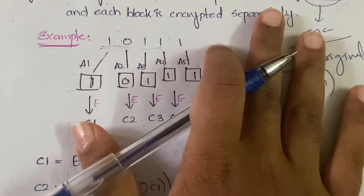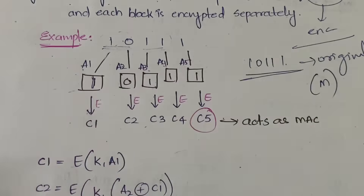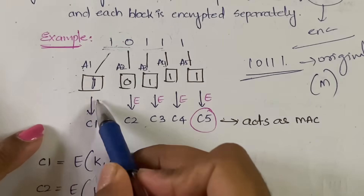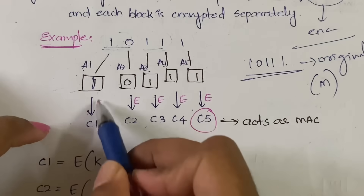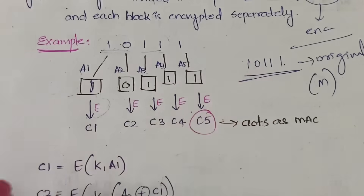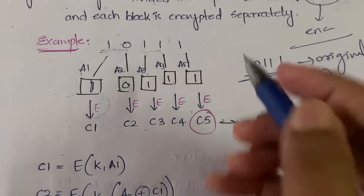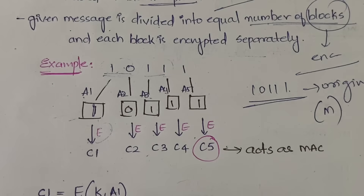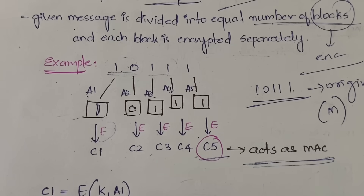Here a1, a2, a3, a4, a5 represent the original message blocks before encryption. You perform encryption E on each block, so for a1 you get c1, for a2 you get c2, for a3 you get c3, and so on up to c5. Each block is encrypted separately, giving a separate ciphertext. The last ciphertext - cn - acts as the MAC code.